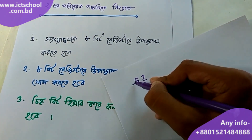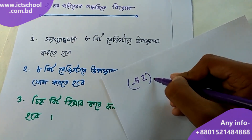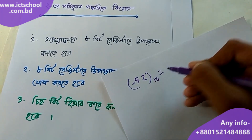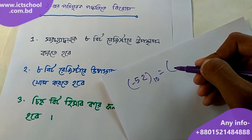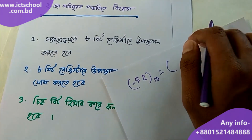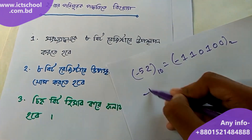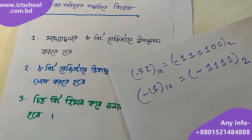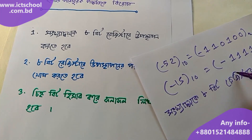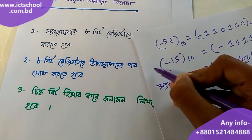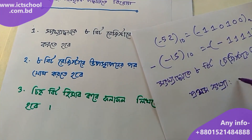Minus 52, minus 52, minus 52 — we will work together on this. By combining the two and working together, we get minus, minus, minus 1.